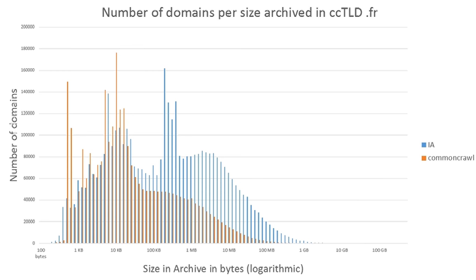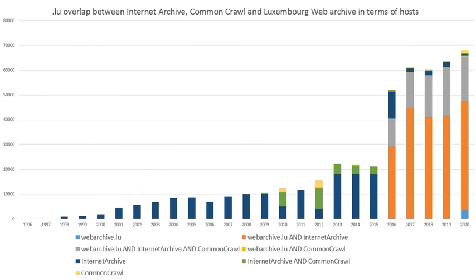What can you do with this data? Here's an example where I compare Internet Archive, Common Crawl, and the Luxembourg Web Archive for .LU. You can see very clearly on the orange bar on the right that from 2016 onwards the Luxembourg Web Archive has done broad crawls, and before that we don't have much data. You can also clearly see that the overlap between Common Crawl and Internet Archive is not so big.